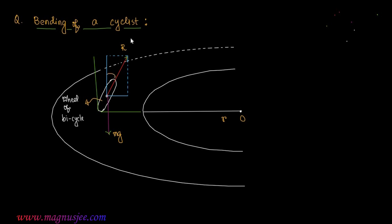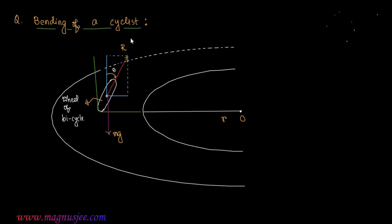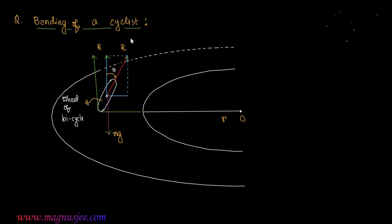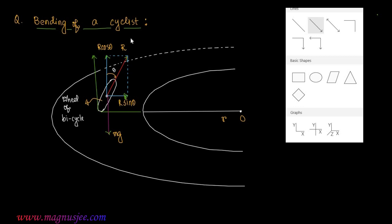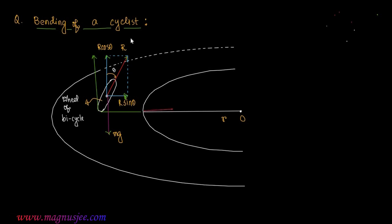Now we can consider the two rectangular components of normal reaction R. R makes an angle theta with the vertical direction. The vertical component of normal reaction R is R cos theta, and the horizontal component is R sin theta.